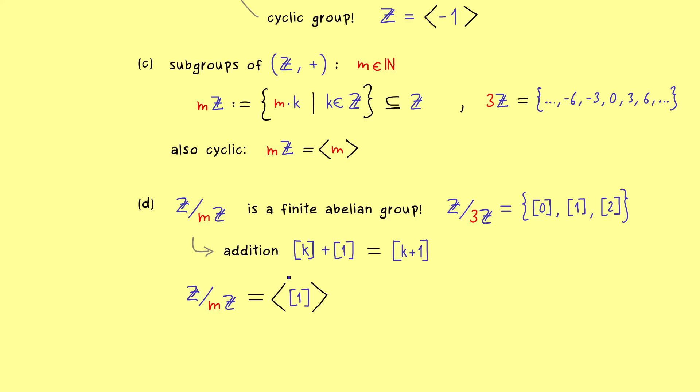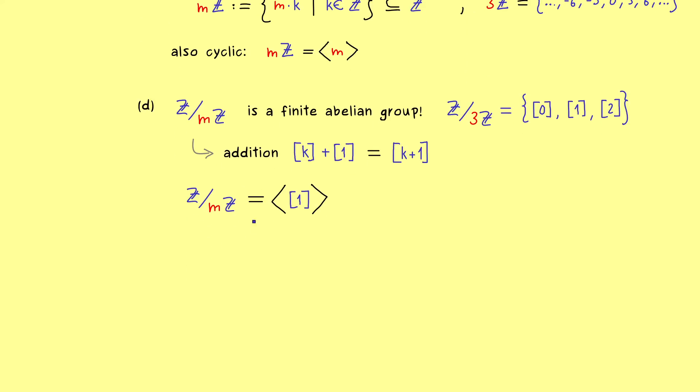So it works exactly like we have it for the integers, with the only difference that now we only need to cover finitely many elements. More precisely, we cover exactly m elements in our group. So you see, with these examples, we have already learned a lot about cyclic groups.